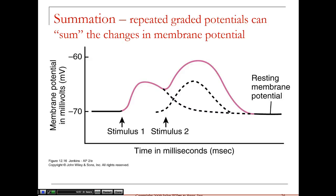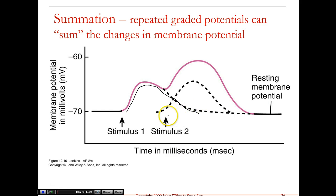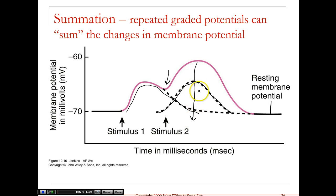Graded potentials can also sum up. If we have a first stimulus, it depolarizes and then returns to resting membrane potential. A second stimulus alone would also depolarize and come back down. But if they come in fast enough, you get an even greater combined response — you can sum together the graded potentials. Just a hint for the future: you cannot sum an action potential. So you can sum graded potentials, but not action potentials.